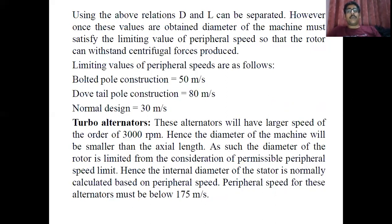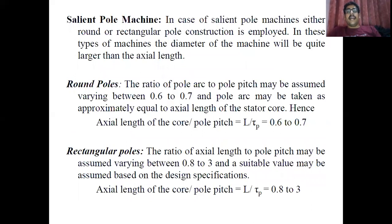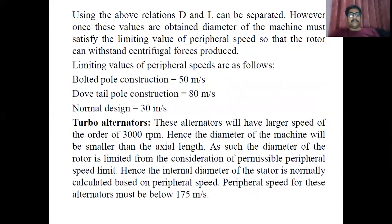Two major important things to note: Number one — if peripheral speed is given in a numerical, you use Va ≤ 30 m/s to separate D and L, where peripheral speed Va = π·D·ns and ns is the synchronous speed. Number two — if peripheral speed is not given, use the formula L/τp with a value between 0.8 to 0.3, depending on the machine type.